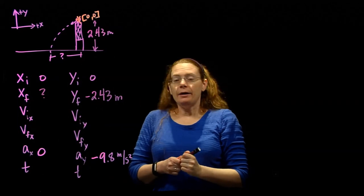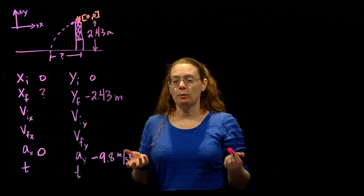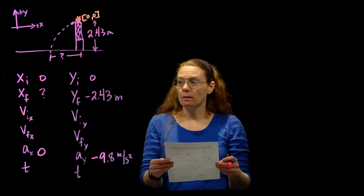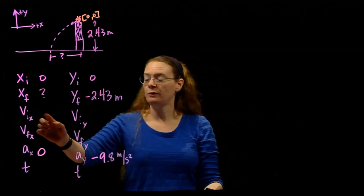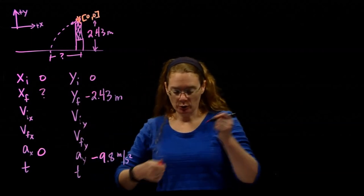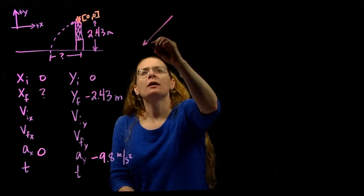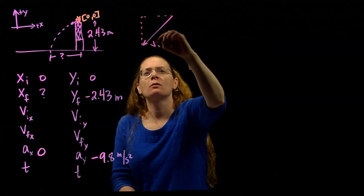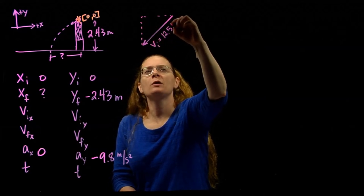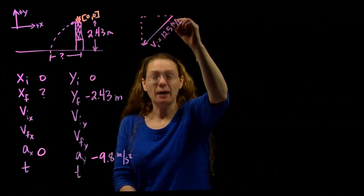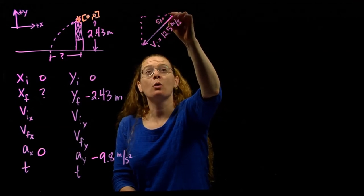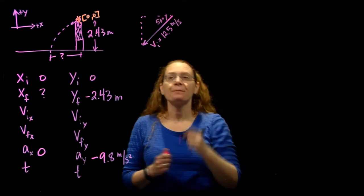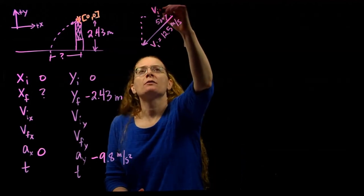And then, this is an angled launch problem, so we can take the information about initial speed and figure out what vix and viy are. So we're told the ball is hit with a speed of 12.5 meters per second, so 12.5 meters per second, at an angle of 50 degrees below the horizontal.